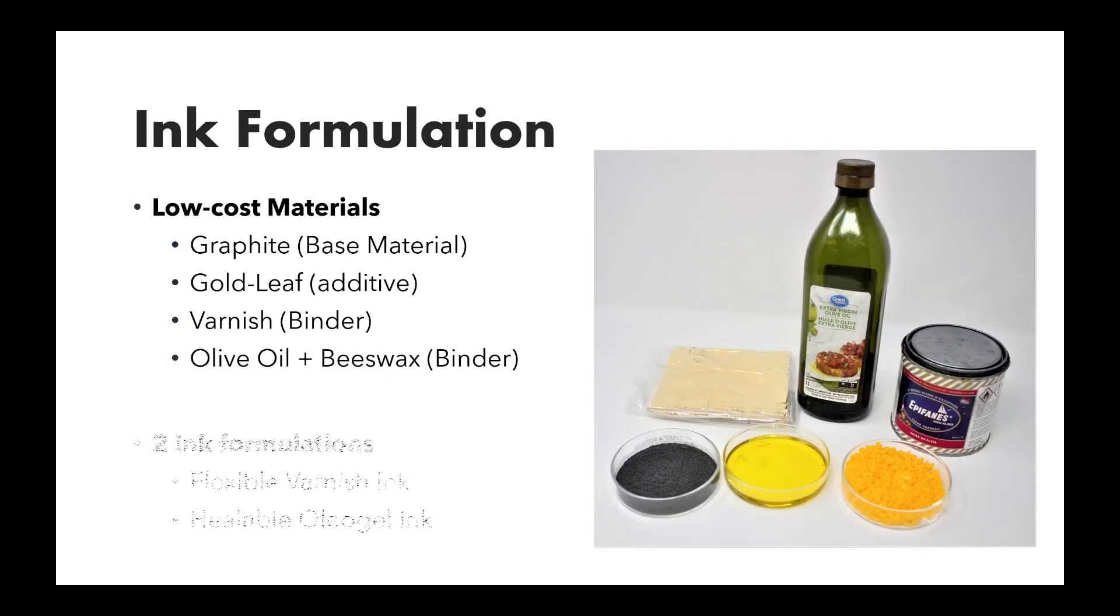Now, coming to the ink formulation, we focused on four low-cost materials primarily. For our base material or conductor, we used graphite. We used gold leaf as an additive which helped enhance conductivity further. To bind these materials, we had two choices. First was a varnish which contains alkyde resins. And the second option was olive oil and beeswax which created an olijel together. Hence, keeping this in mind, we had two ink formulations possible. One, which led to a flexible varnishic. And the second, which led to the healable olijel ink.